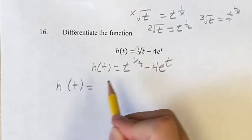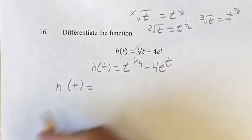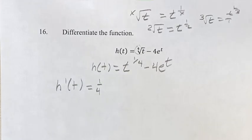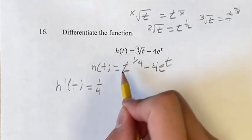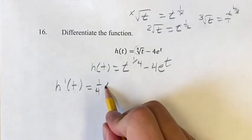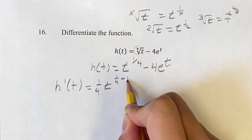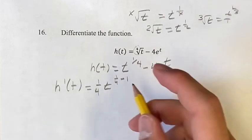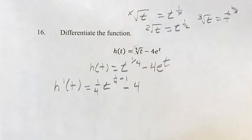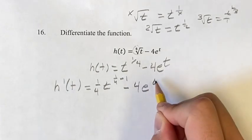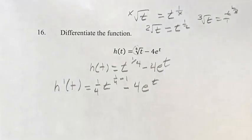What we do here is we take the exponent, and you bring it down as the coefficient times the 1 that's already the coefficient, times t to the 1 fourth, and we subtract 1 from our old exponent, and that's going to be our new exponent. Minus 4, and then the derivative of e to the t is just e to the t.